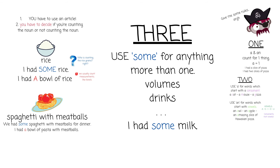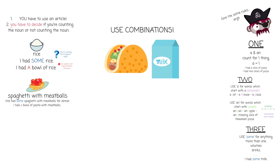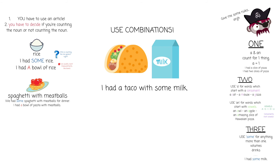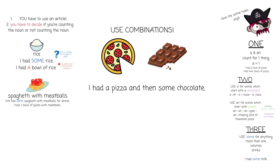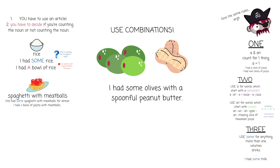Generally, use "some" for anything more than one, or like volumes or things you really would not count — we would normally use "some". For example, "I had some milk", but like I said before you can count it by saying "I had a glass of milk". Usually if it's more than one or not something we count, we would use "some", but the decision is still on you. I recommend trying to use some combinations — for example, "I had a taco with some milk", or "I had a pizza and then some chocolate", or "I had some olives with a spoonful of peanut butter".